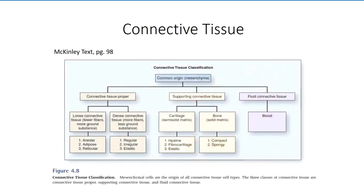Connective tissue can be subdivided into connective tissue proper, supporting connective tissues, which will be discussed in a later session, and fluid connective tissue, which constitutes blood. Connective tissue proper can be further divided into loose and dense connective tissues.